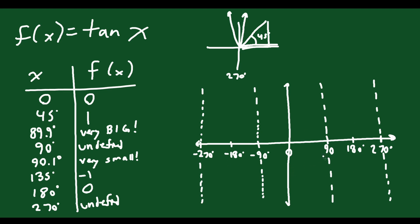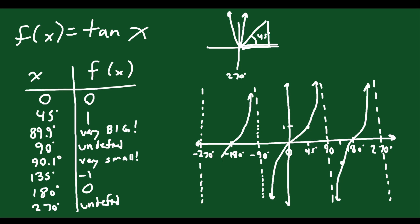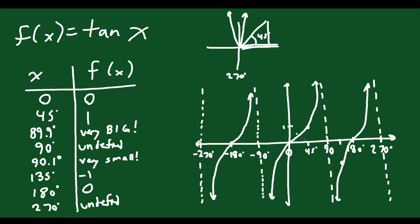At 45 degrees you're going to be at a height of one, and at 135 you're at negative one. Those points guide us. The shape looks like this: it comes up through zero and shoots toward the asymptote, then comes down from the other side of the asymptote and passes through the next zero crossing. These funny-looking curves just repeat forever. This is the relationship between your slope and your angle — the x direction — and tan of x is the slope of the line that the angle x makes.